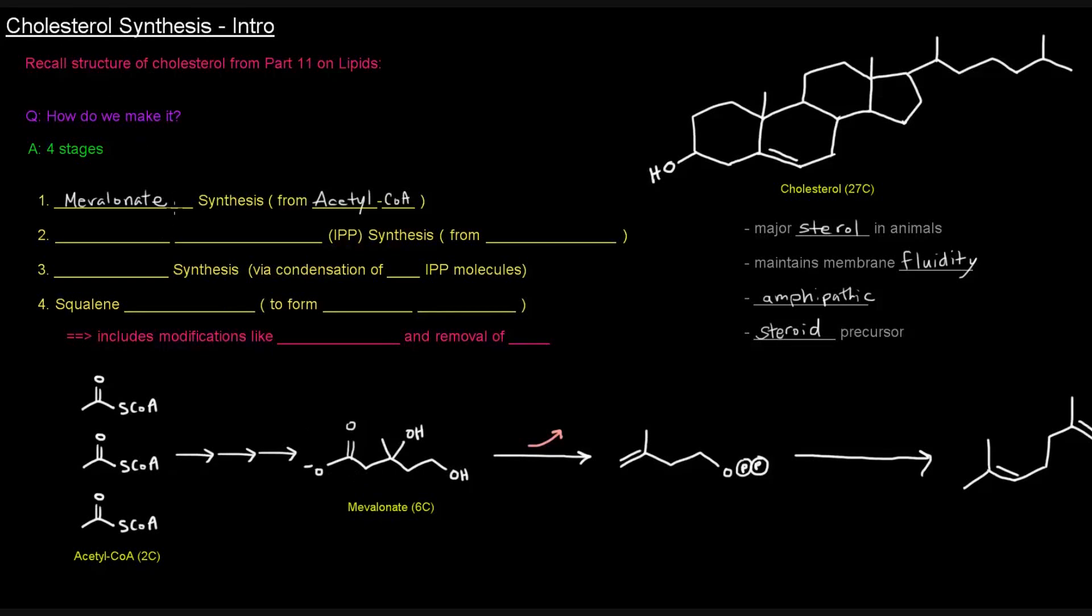Now, once we have mevalonate, the next thing we're going to do, the next stage, so this here is stage one. Stage two here is called isopentenyl pyrophosphate synthesis, or IPP synthesis. And this, of course, is made from mevalonate. So this molecule here is IPP, isopentenyl pyrophosphate.